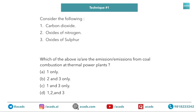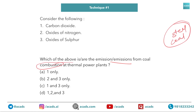Another question: which of the following are emissions from coal combustion? Options include carbon oxides, oxides of nitrogen, oxides of sulfur. Whether it's a steel plant or a coal plant, the answer is again D. An important observation is that UPSC repeats questions — once they ask about a steel plant, then a coal plant, then a thermal plant, and similar industries. So please solve previous year question papers and try to figure out these techniques.